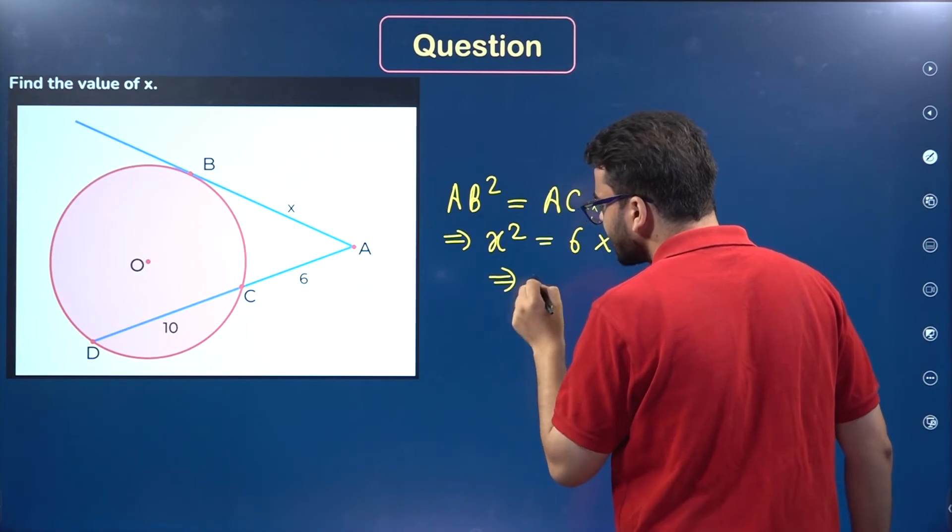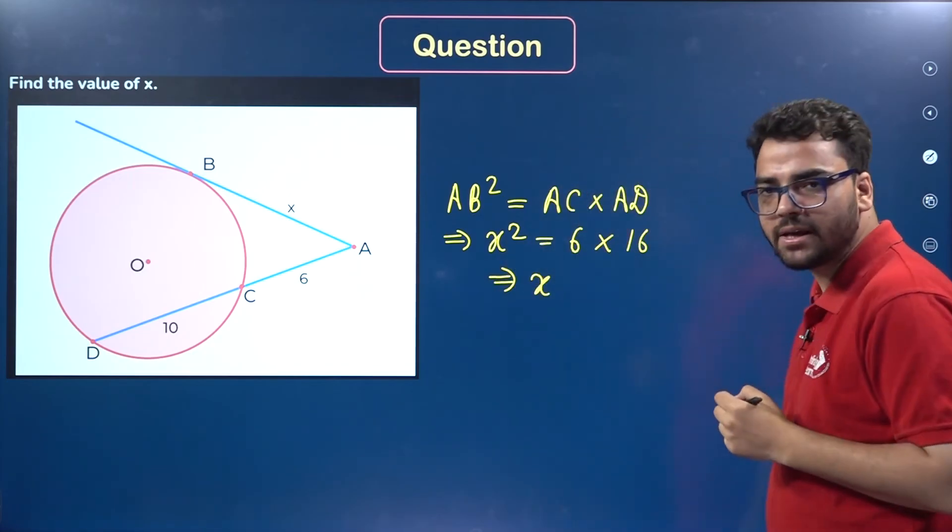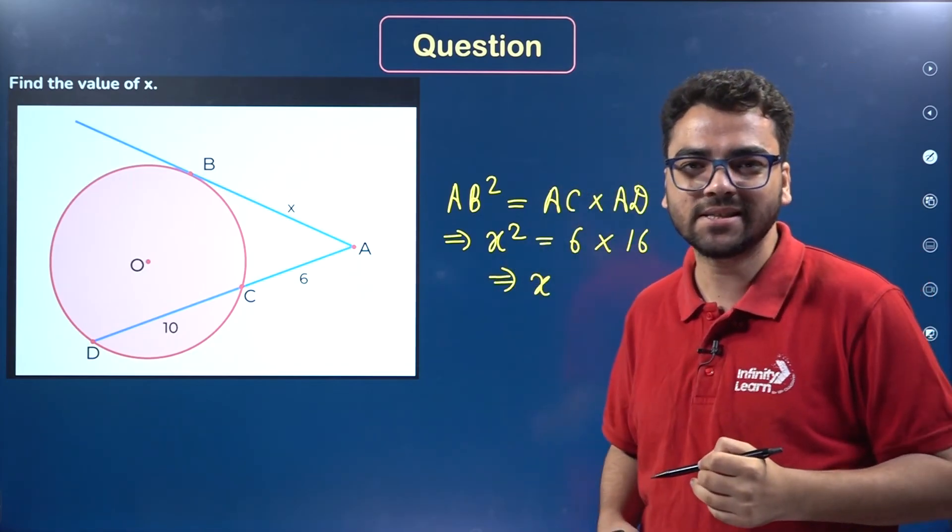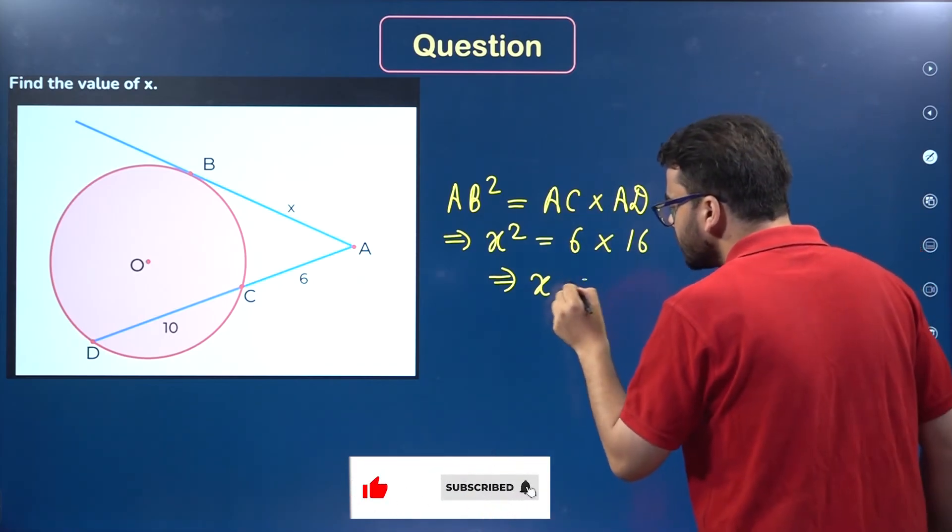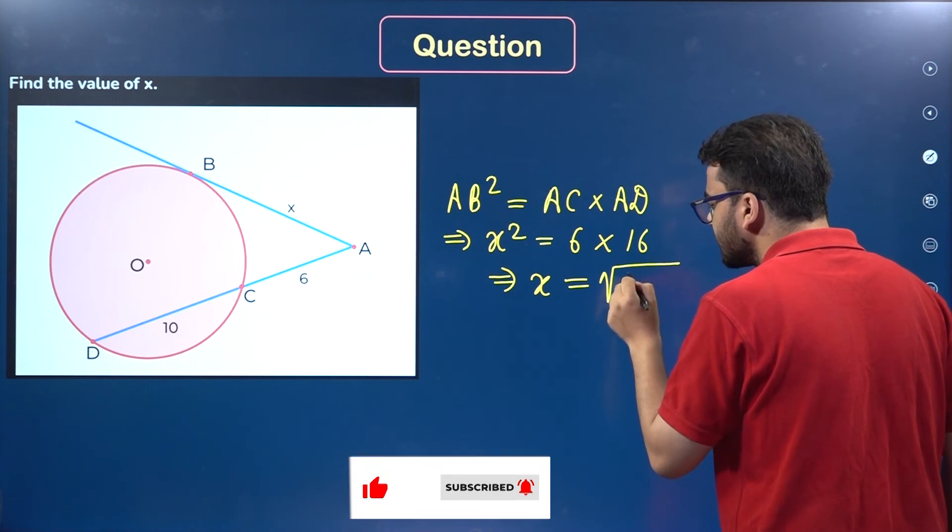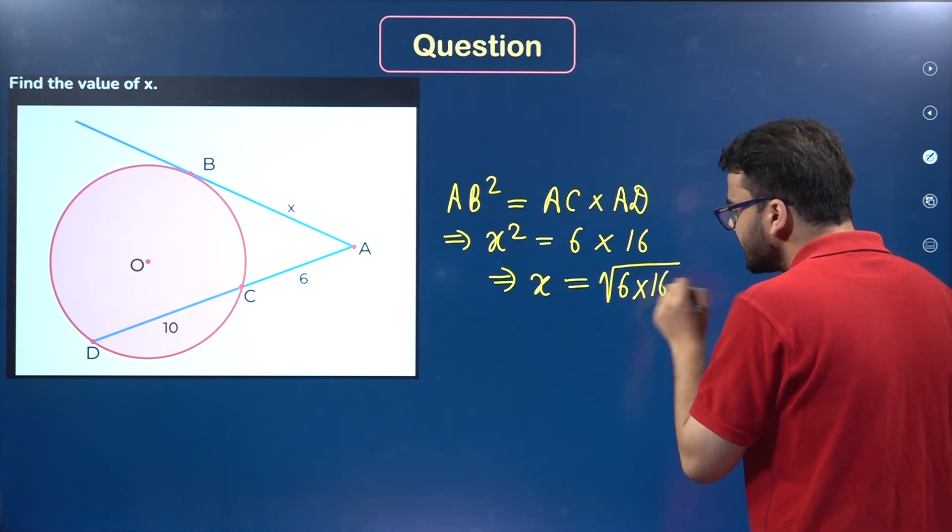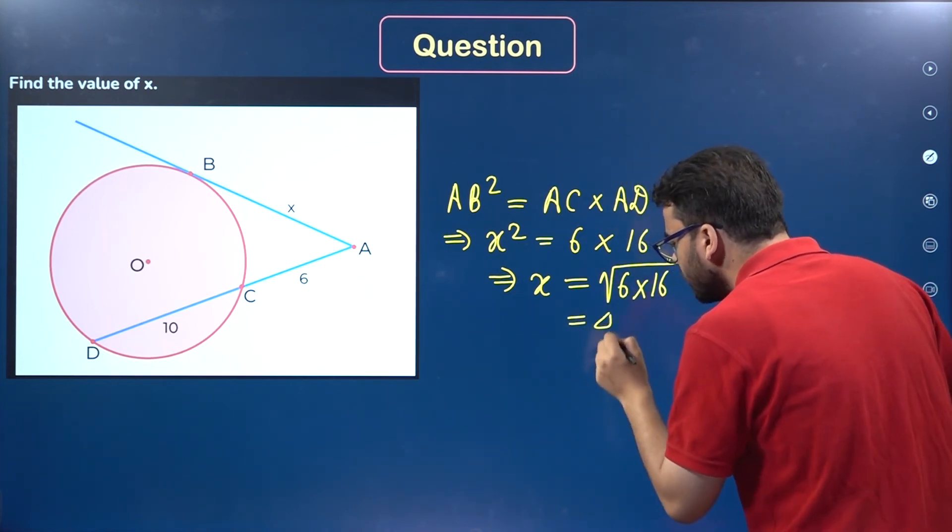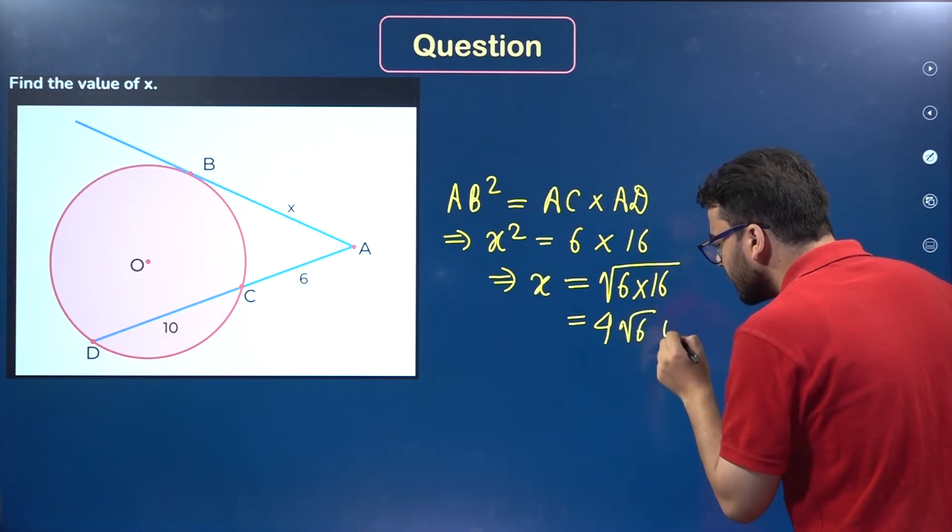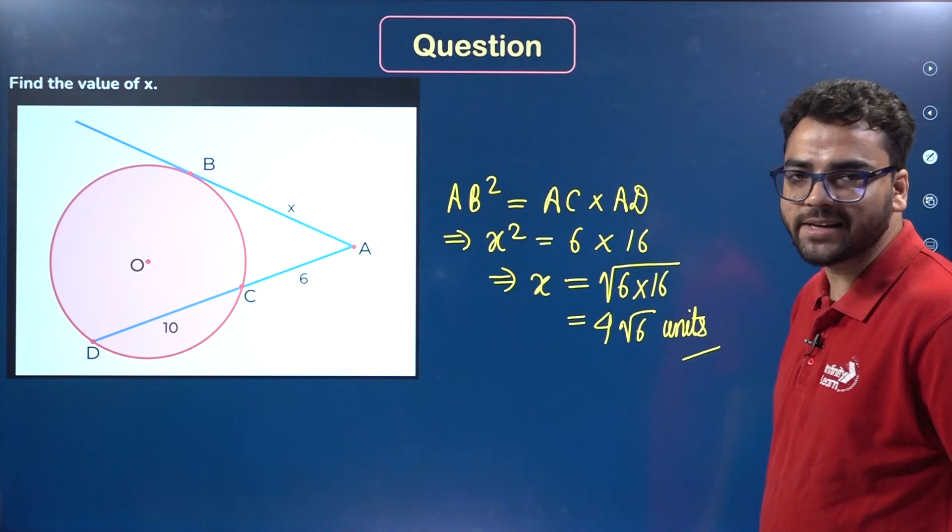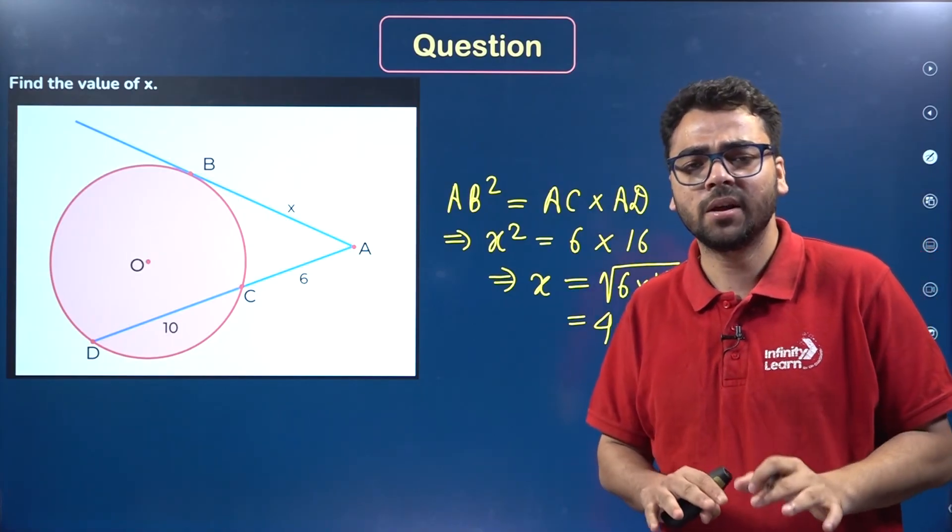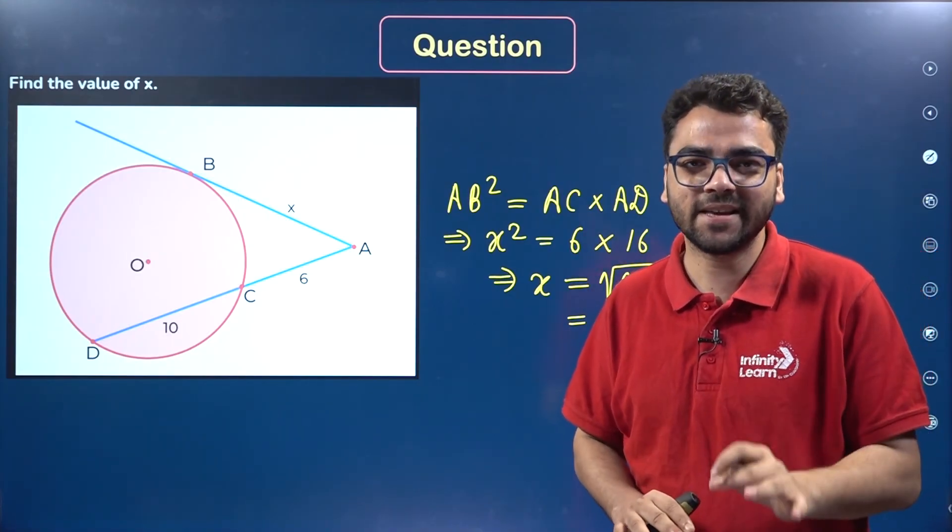We need to find the value of X. This is a quadratic equation, but since we're talking about distance, we'll neglect the negative value. X = √(6 × 16) = √96 = 4√6 units. That's the value of X using the tangent secant theorem.